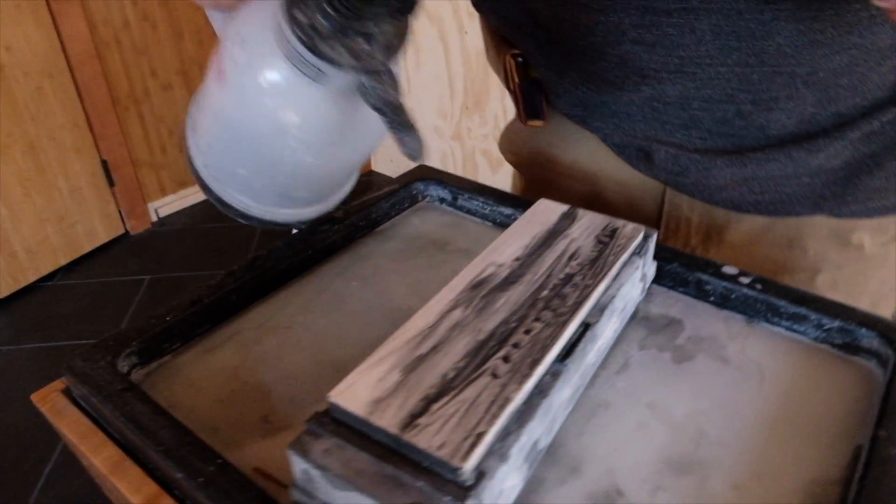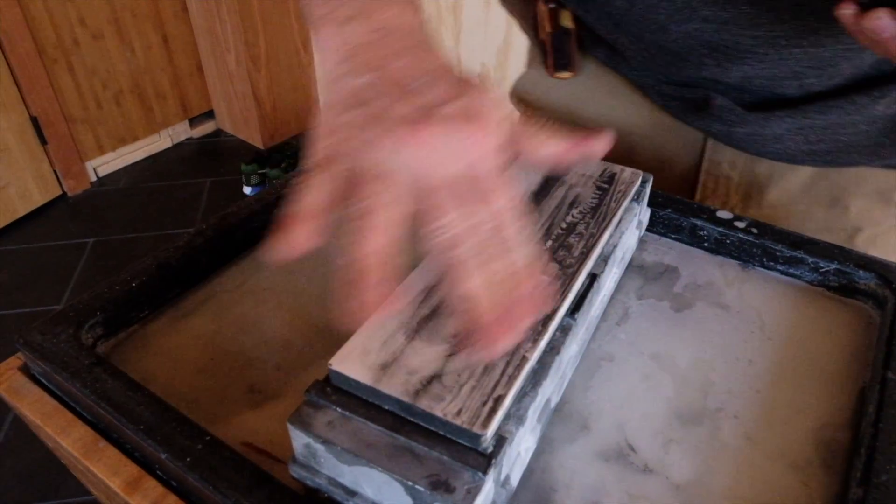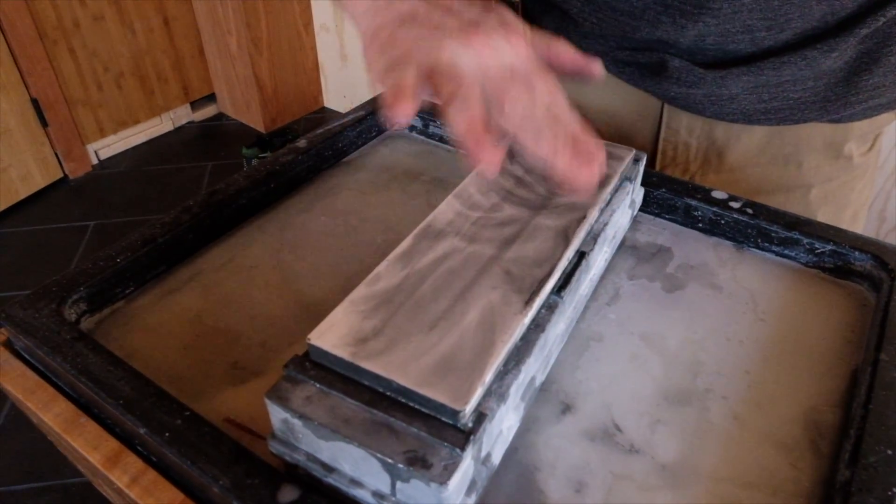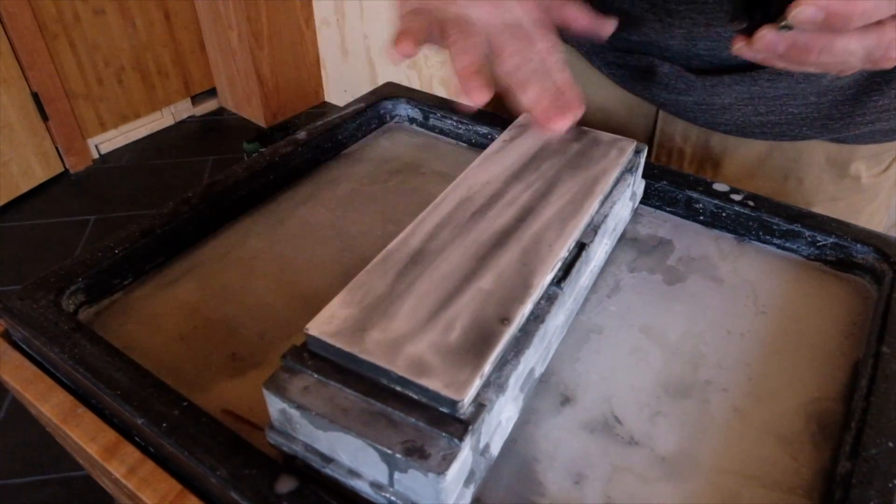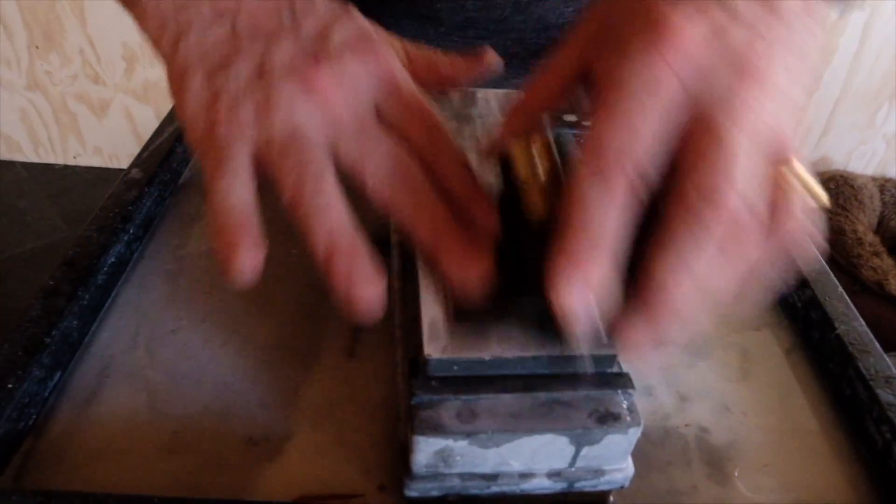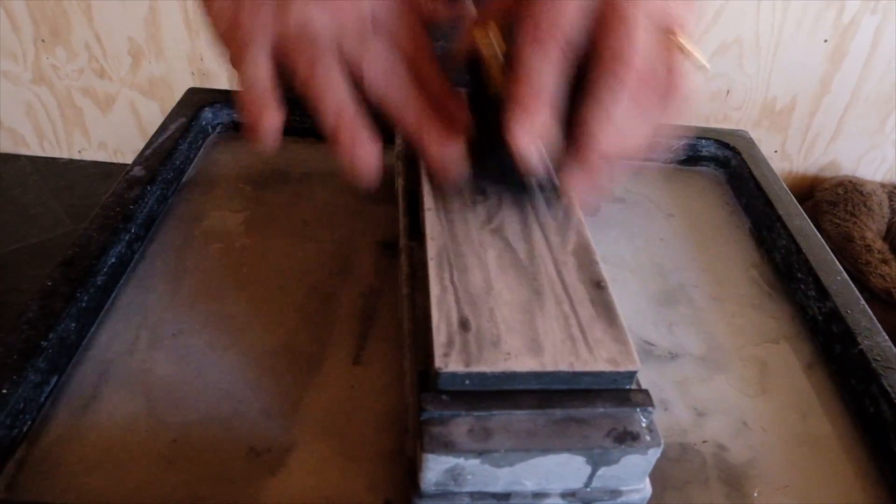Let's turn it out and get this side. Let's get a little more water up there. Keep the stone really wet. Don't let the slurry build up and get thick. You really don't want a thick slurry. It's not going to help you sharpen.